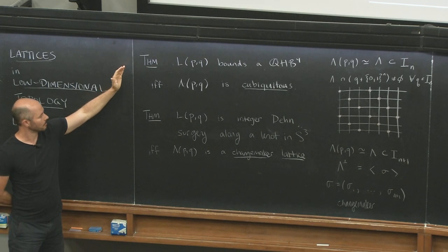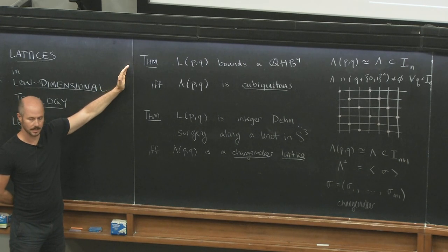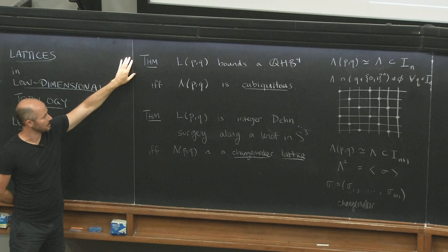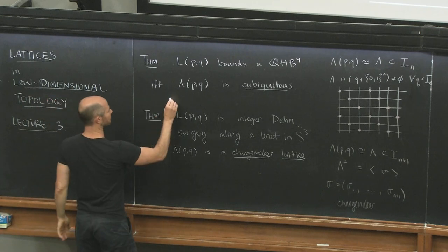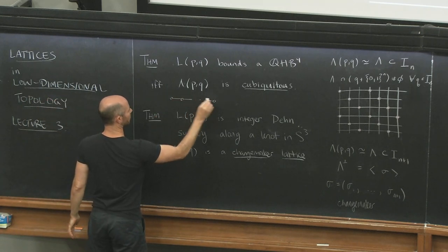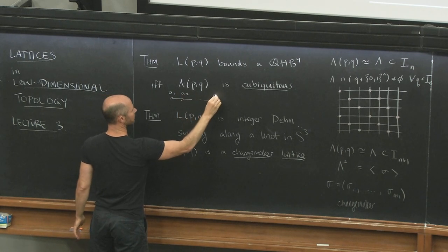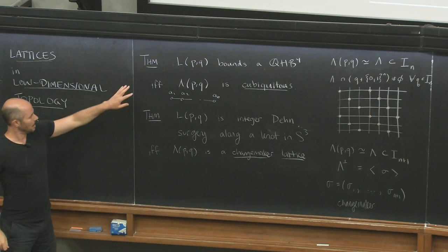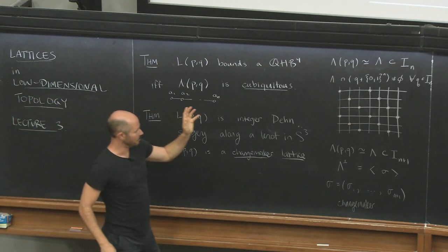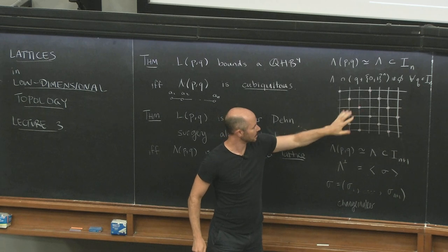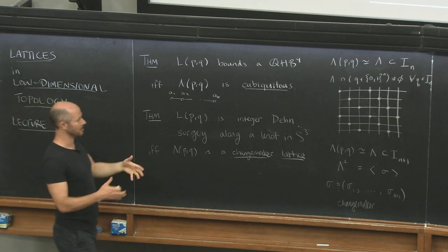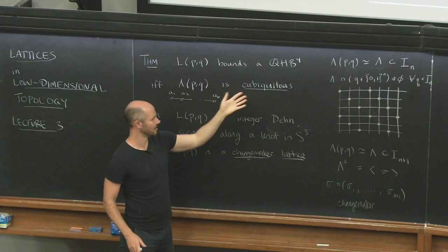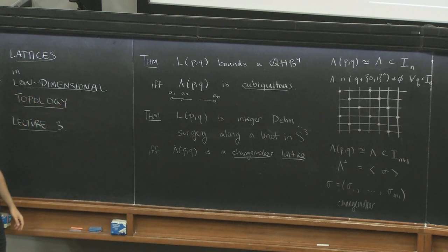The first theorem: the condition that a lens space bounds a rational ball is equivalent to an associated lattice — this linear lattice with coefficients corresponding to the continued fraction expansion of P over Q — embedding into Euclidean space in which it hits every unit cube with integer vertices. It's ubiquitous in the sense that it hits every cube.